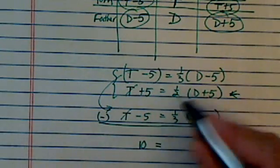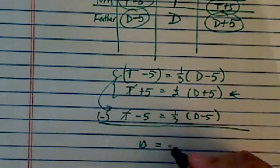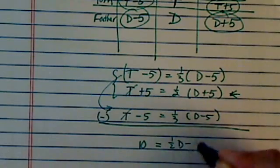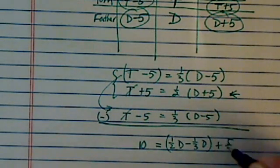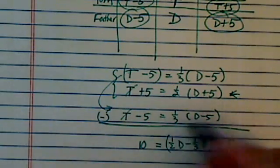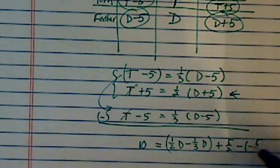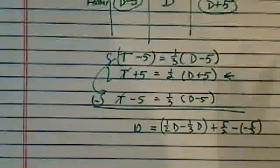10 is equal to half D minus a third D. Let's write it out. Half D minus a third D, plus five over two, minus, minus again, five over three. Let's clean it up from here.